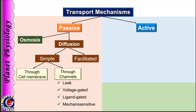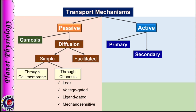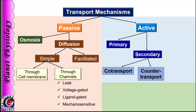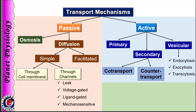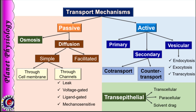Diffusion can take place through leak channels, voltage-gated channels, ligand-gated channels, or mechanosensitive channels. Active transport can be primary active if it directly utilizes metabolic energy, or secondary active if the process uses metabolic energy indirectly. Secondary active transport can be of two types: co-transport and counter-transport. The third type of active transport is vesicular transport, where substances move via vesicles — it can be endocytosis, exocytosis, or transcytosis. Endocytosis can be pinocytosis or phagocytosis. Other transport mechanisms include transepithelial transport, which can take place via transcellular or paracellular route, and the last type is solvent drag.